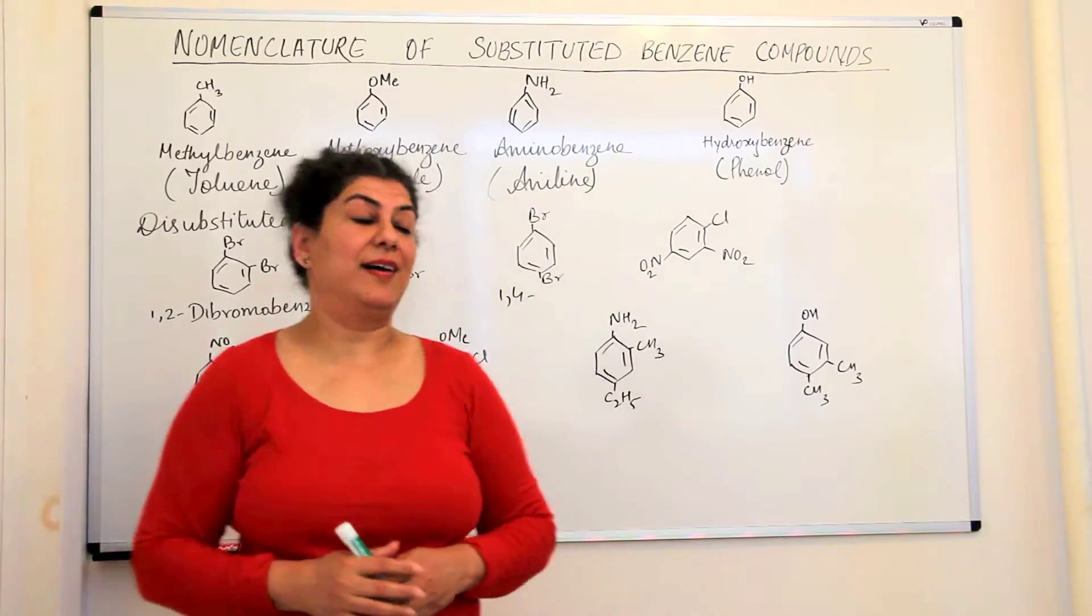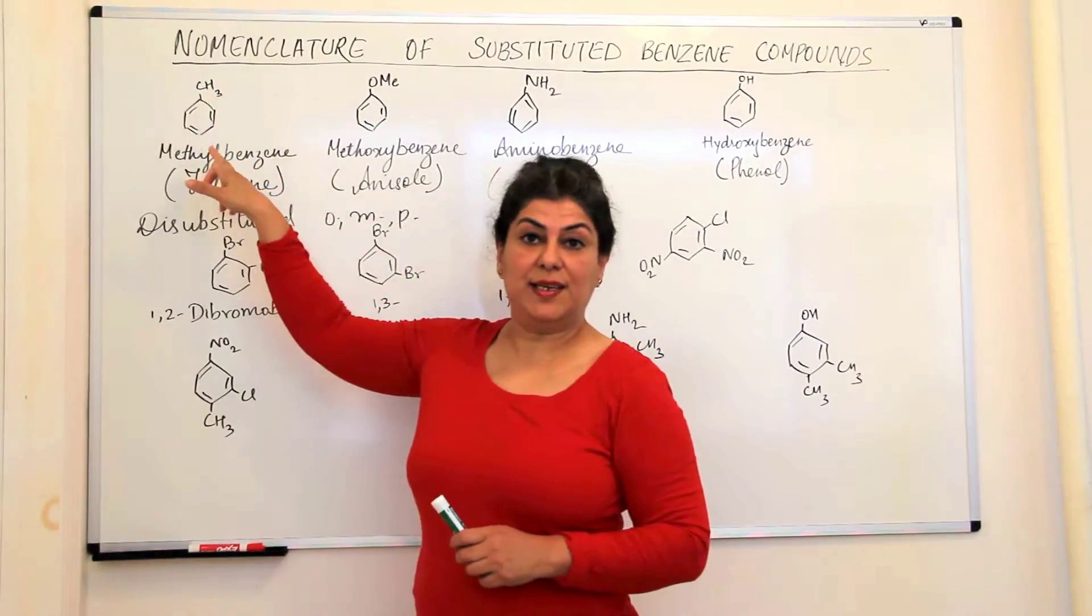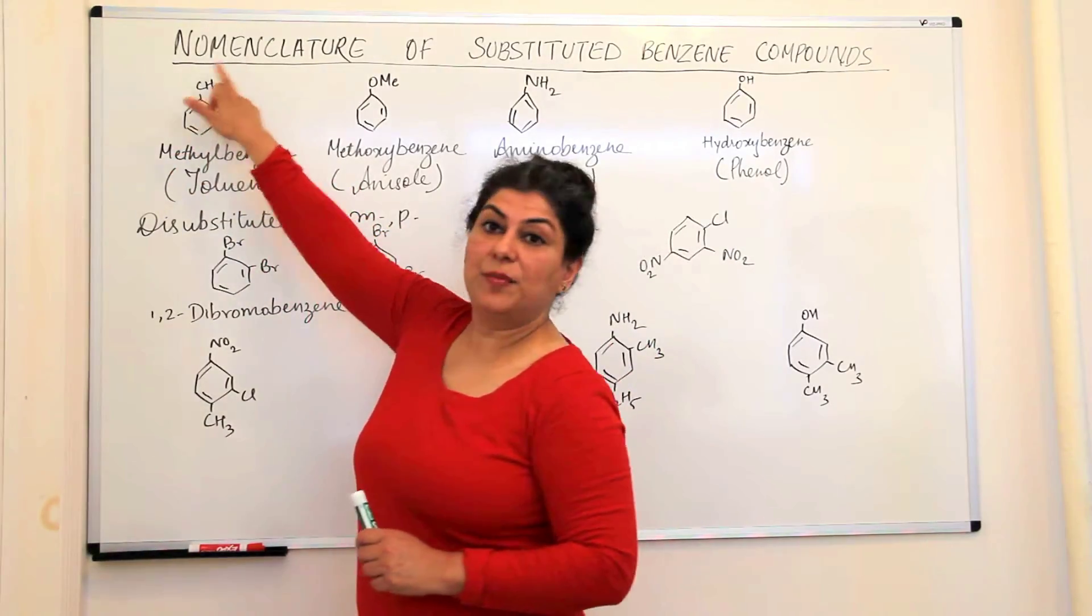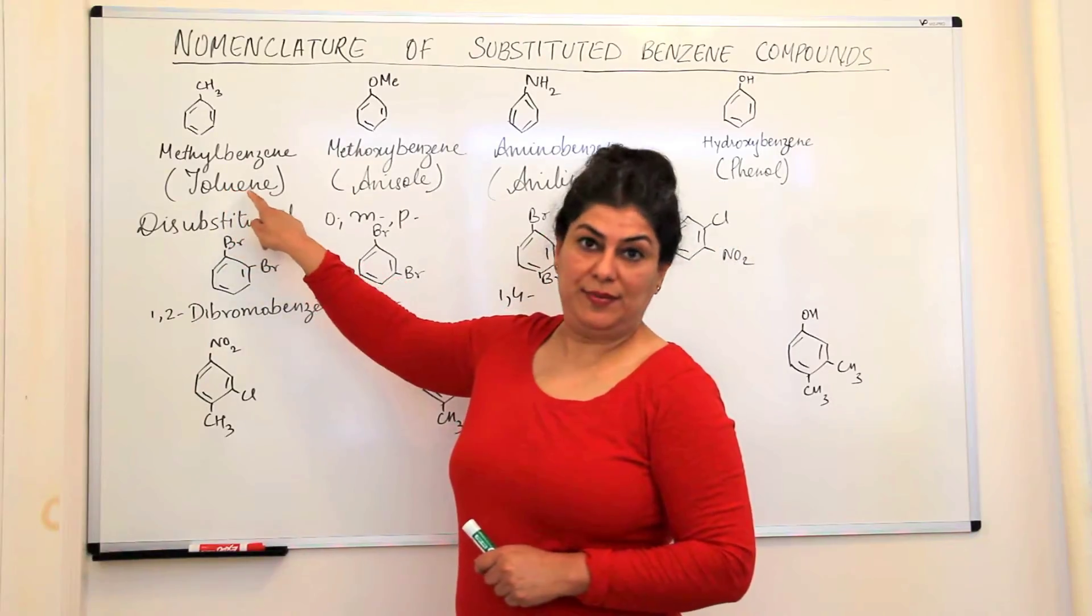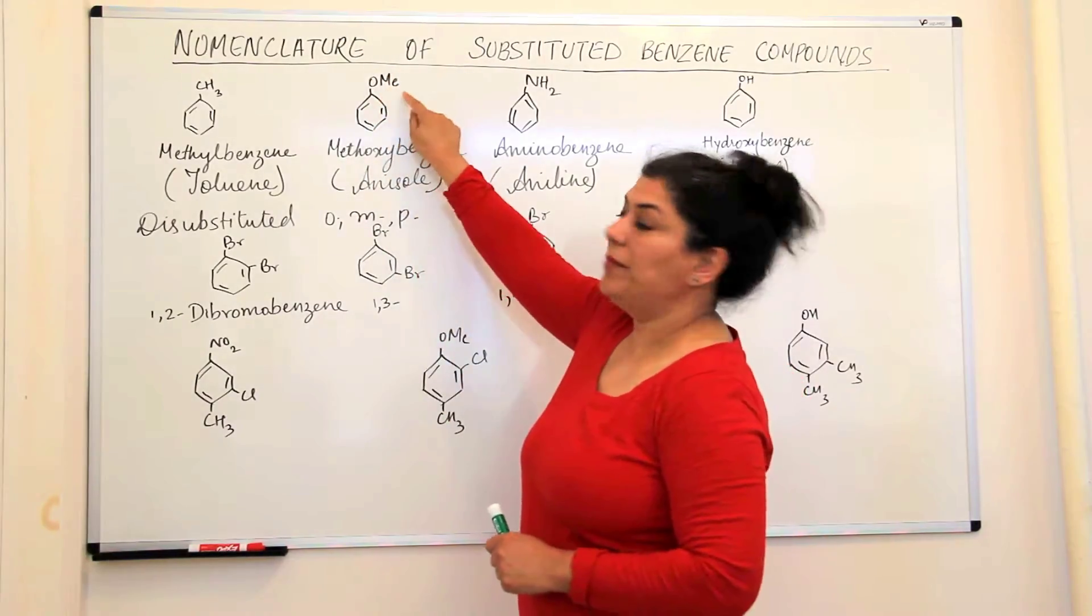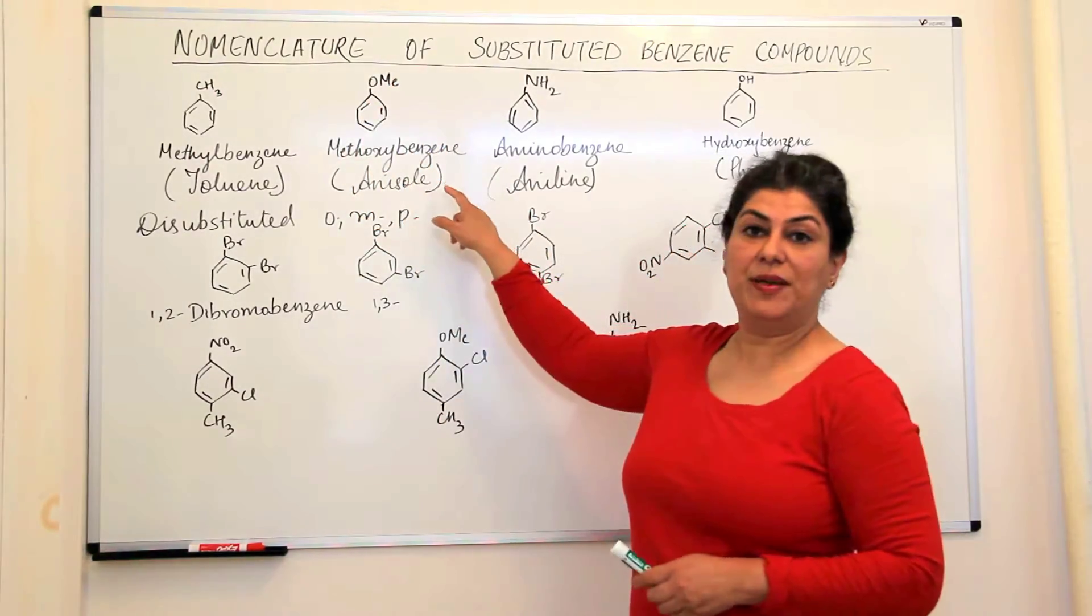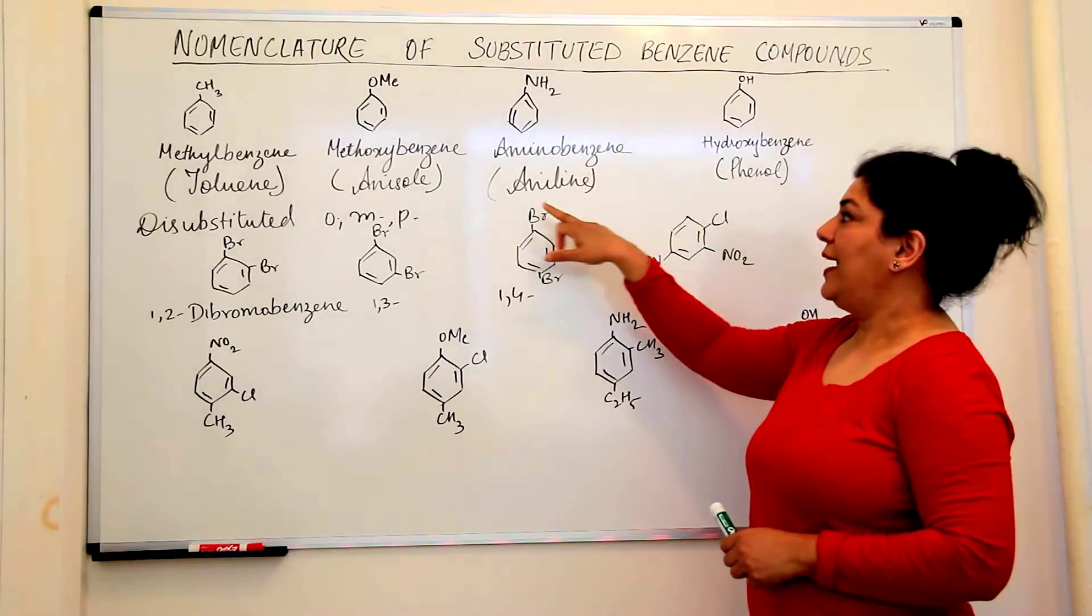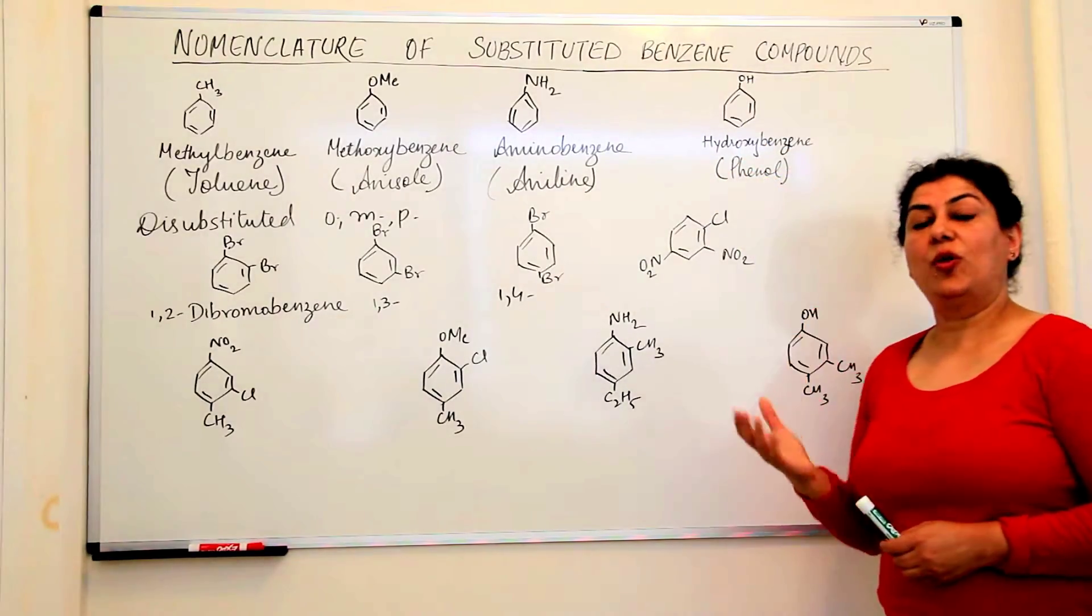Let us start with what these benzene are. Do you see this first substituted benzene compound? When you have a substitution on benzene, the substituent is written as a prefix. Now, for example, this is benzene and a methyl group is attached to it. Therefore, it is known as methylbenzene. The common name is toluene. O-M-E also stands for the methyl group and O-M-E would then be methoxybenzene. So, this is methoxybenzene. The common name of methoxybenzene is anisole. Amine attached to benzene is aminobenzene and the common name is aniline. O-H attached to benzene would be hydroxybenzene and the common name is phenol.